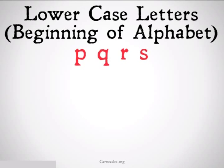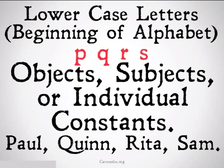The first symbol we'll be looking at is using lowercase letters from the beginning of the alphabet. These are going to represent objects, subjects, or individual constants. These are things like proper nouns, proper names, names of places or people, such as Paul, Quinn, Rita, or Sam. They're going to be specific objects, individual constants.